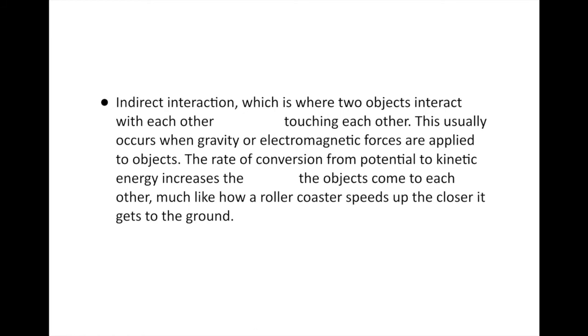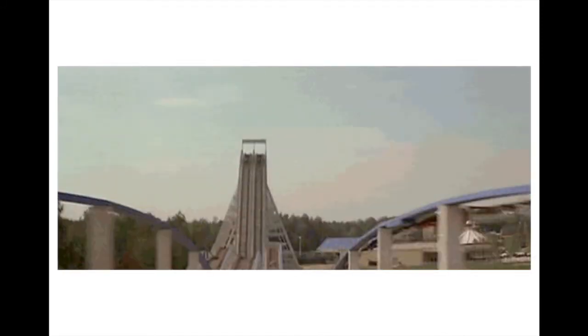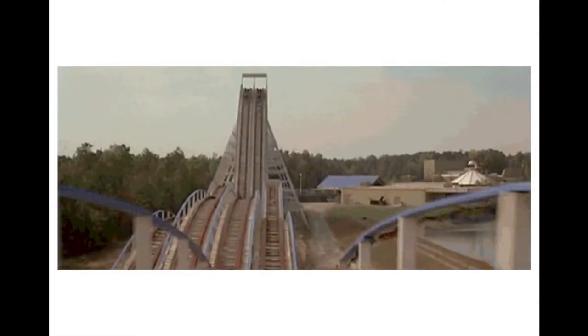The other type is indirect interaction — objects interact without touching. This usually occurs when you have force fields like gravity fields or electromagnetic fields applied to objects. The rate of conversion from potential to kinetic energy increases the closer the objects come to each other, much like a roller coaster speeds up as it goes downward. As it goes upward, it collects gravitational potential energy, and as it goes down closer to the earth — the source of gravitational pull — the faster it turns from potential to kinetic energy. The same thing occurs with a pendulum: as it swings, it gathers gravitational potential energy going up, and transfers it into kinetic energy as it comes back down closer to the earth.